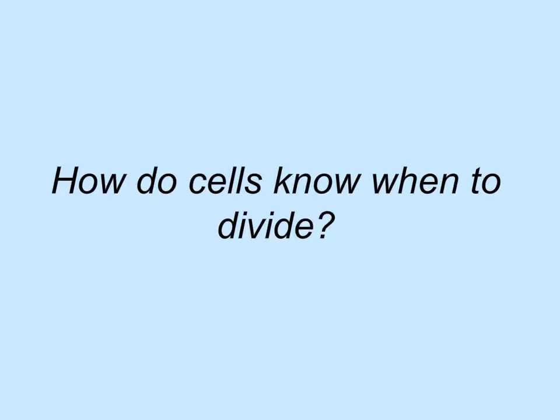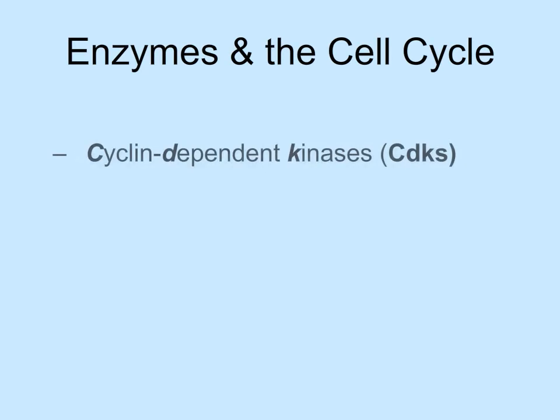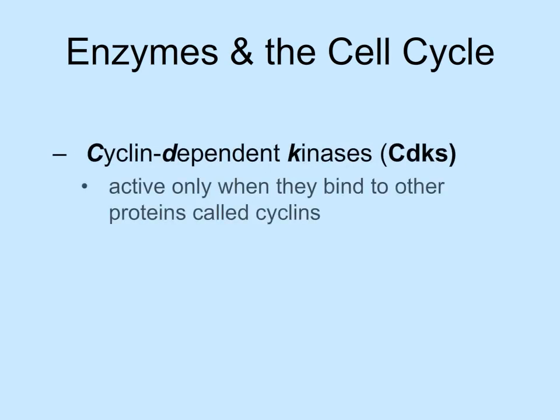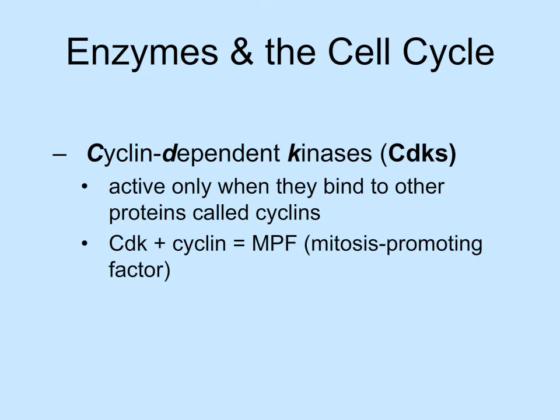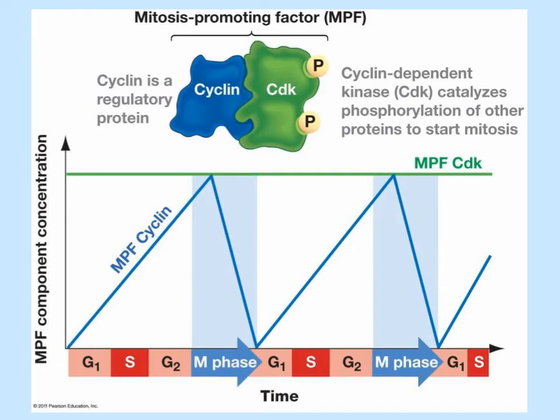How does a cell know when to enter the M phase and start dividing? Special enzymes called cyclin-dependent kinases, or CDKs, regulate the progression of the cell cycle. These kinases are active when they bind to proteins called cyclins, and this complex of kinase and cyclin is called the mitosis promoting factor, or MPF. When concentrations of MPF increase during interphase, the cell enters the M phase, because the CDK part of this factor adds a phosphate to other proteins that initiate mitosis.